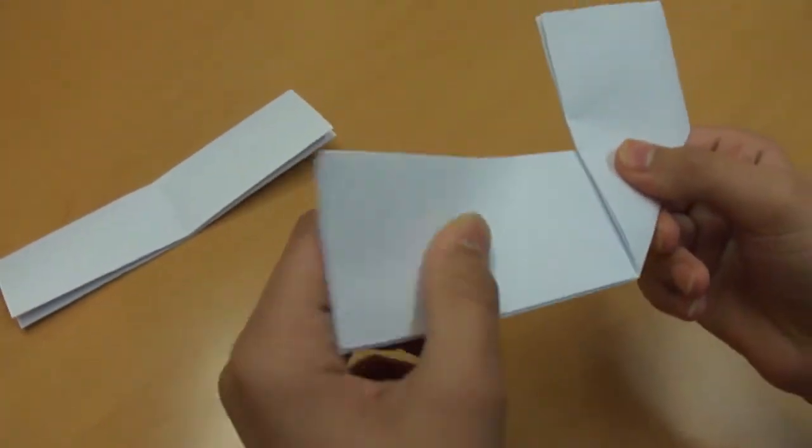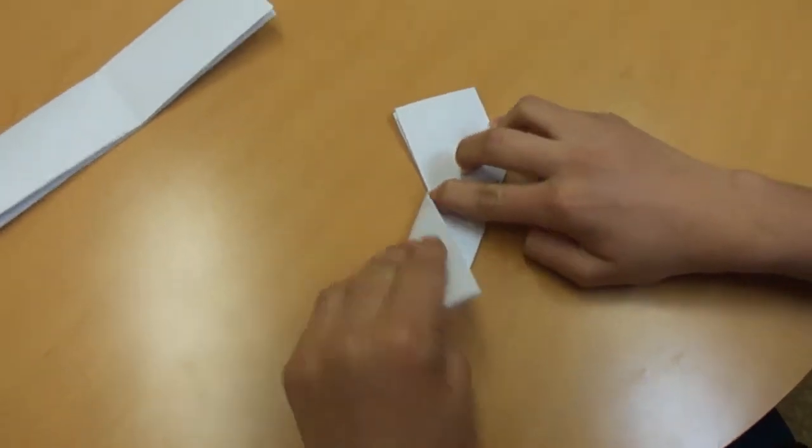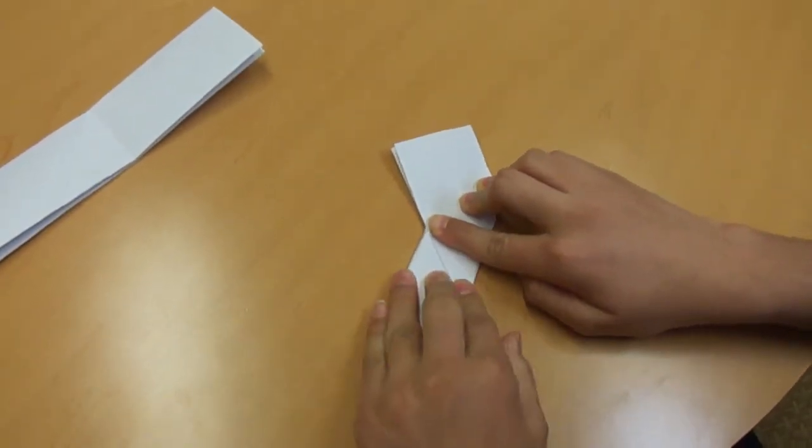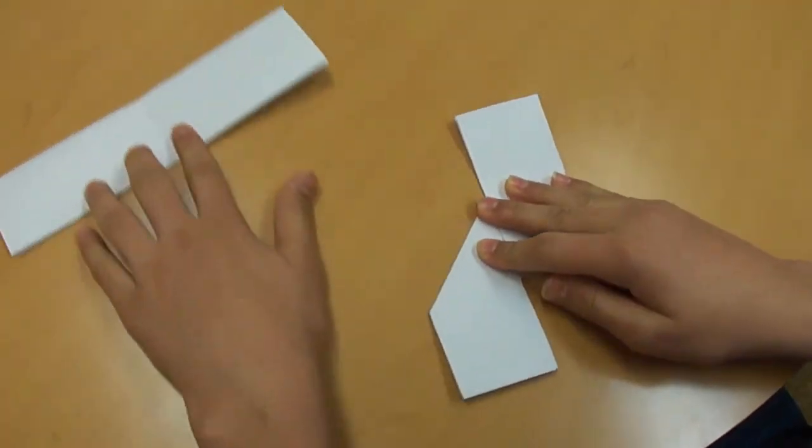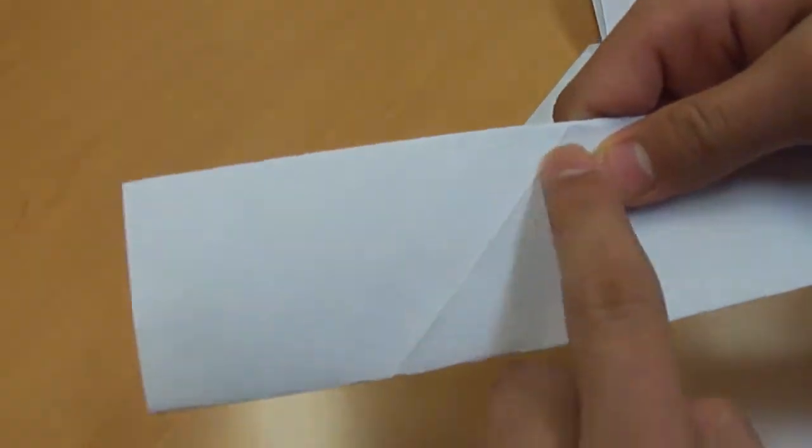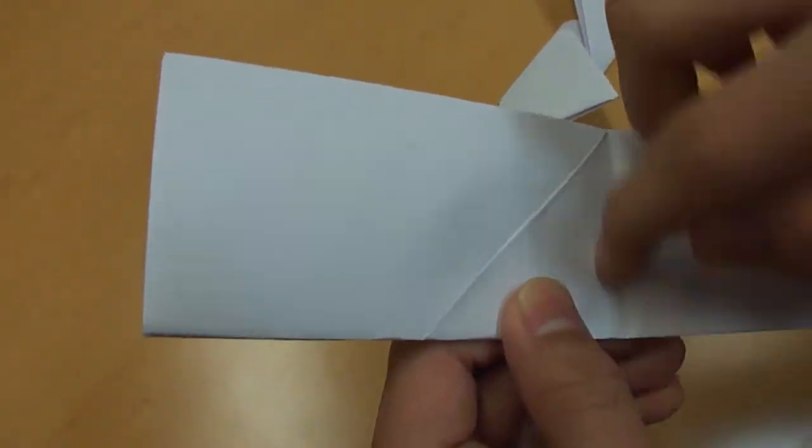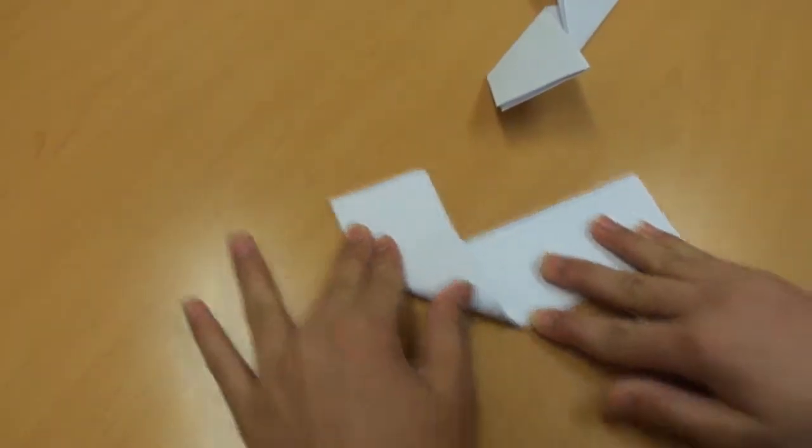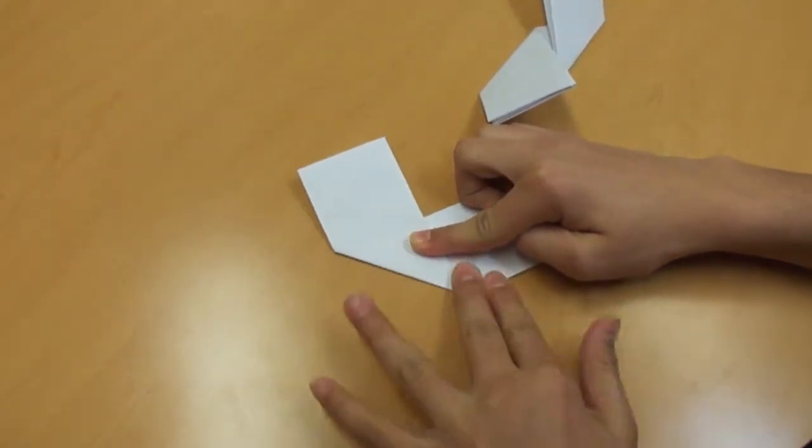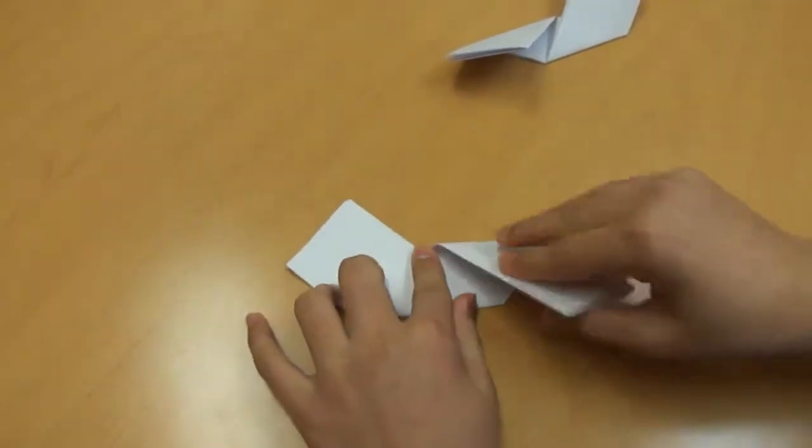Then you open it. Get the first paper out. Or the second paper. It doesn't matter. So see this line right here? That side you go like this. And see the other line? You fold it in like this. Make sure it's good enough. And the opposite side, you could just go on the bottom.